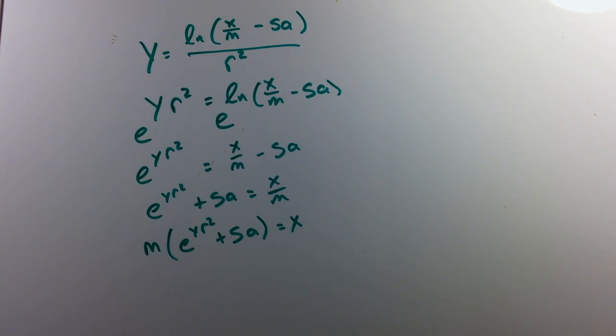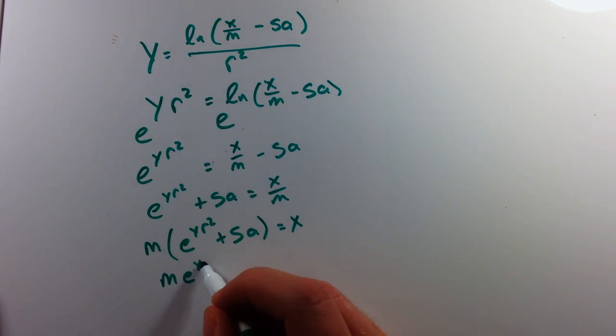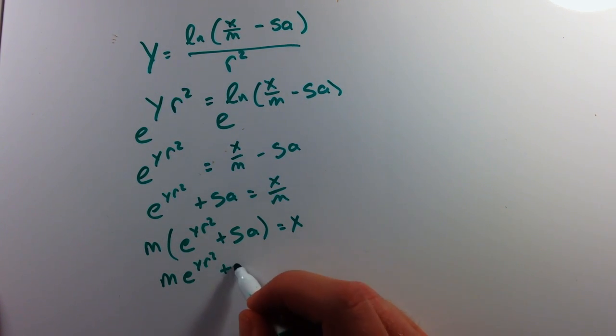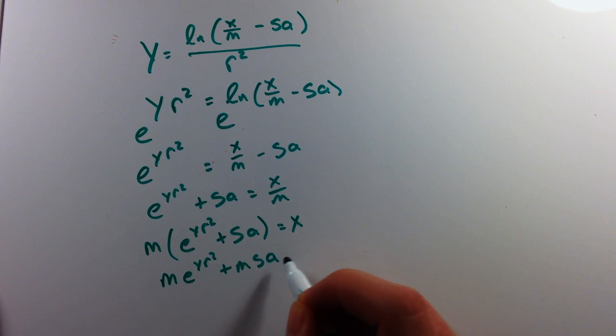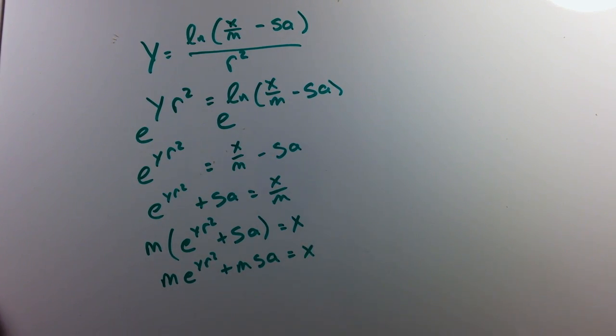We have to distribute that m to both parts. So we have m times e to the y r squared plus m s a equals x.